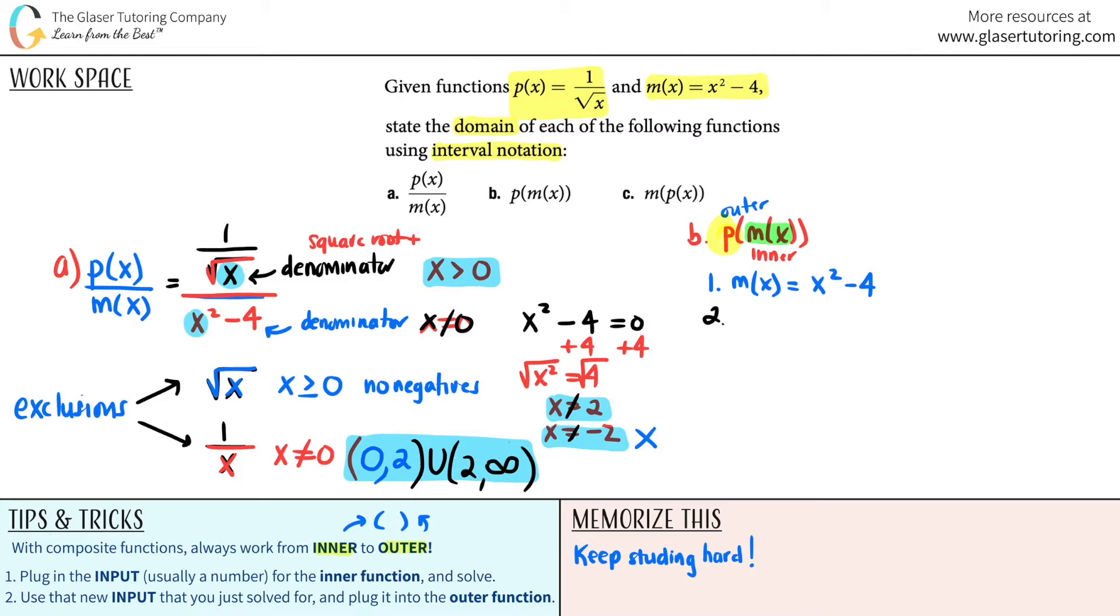So the inner function here was just m of x. The m of x is x squared minus 4. Then you use that new answer, the input that you just solved for, and plug it in into the outer function. The outer function was the p in this case. So step number two, p of this answer, x squared minus 4. And that equals, now the p function was this, which means that any time that you see an x, now you're going to plug in this. So it would be 1 over the square root of, well, what's x now? It's this. So x squared minus 4. Don't have to simplify. That's not what the question was asking. We have our function here. Now we just got to find out the domain.